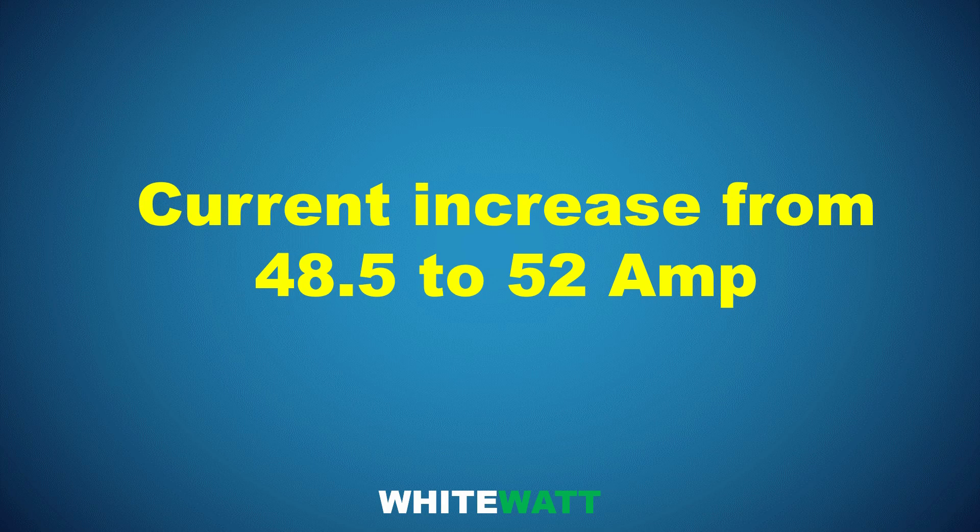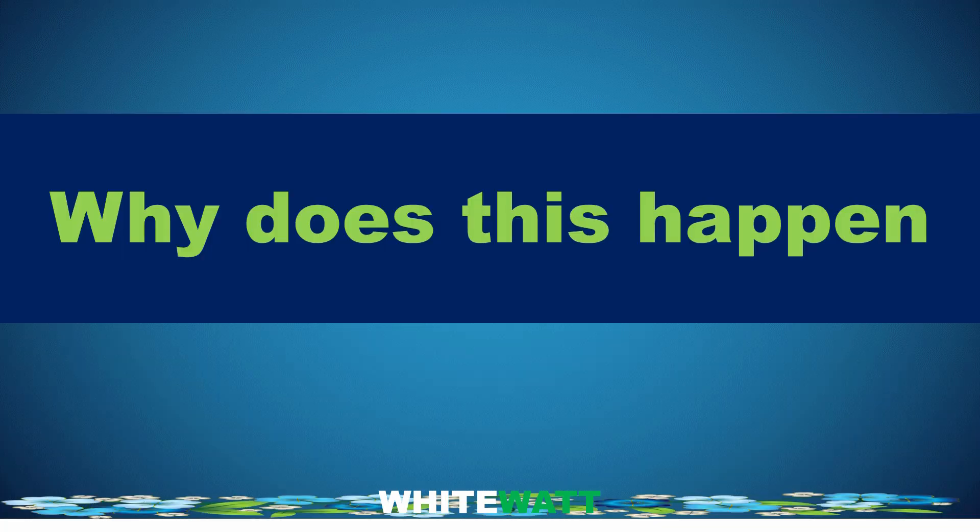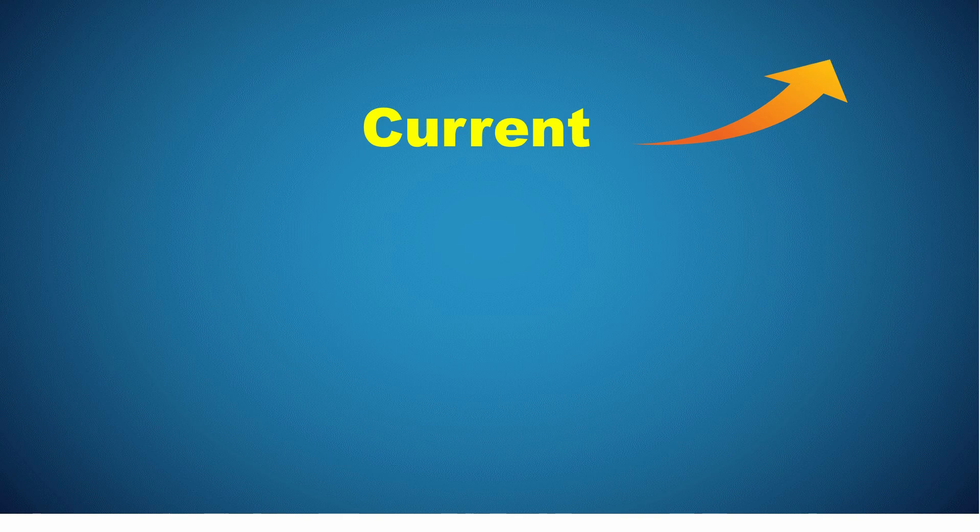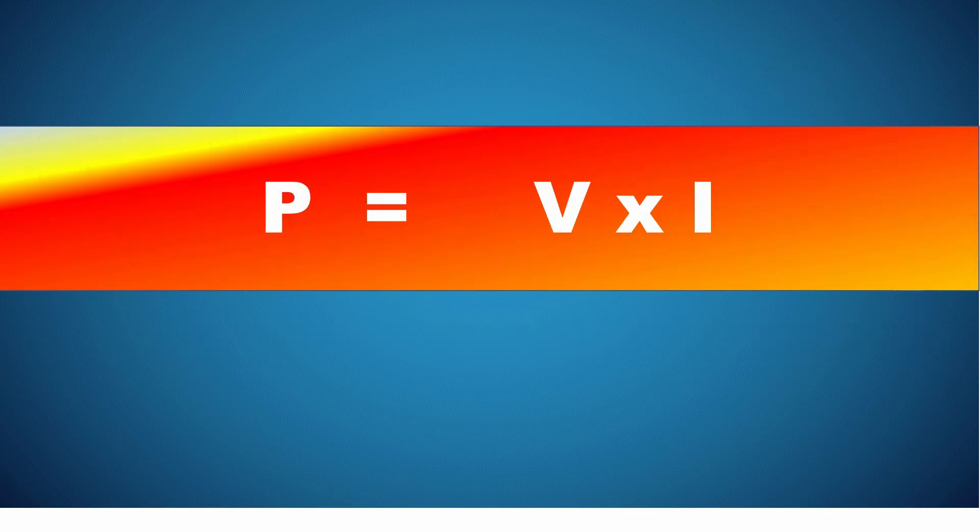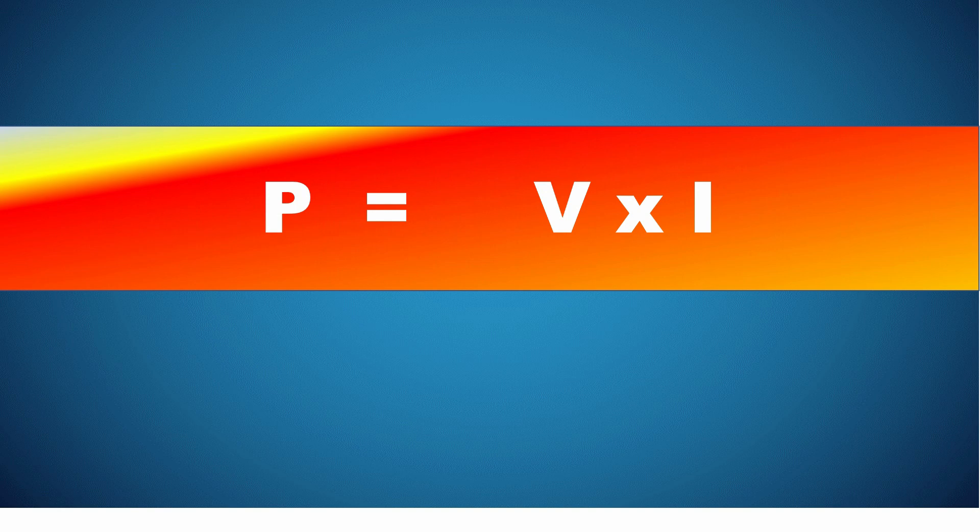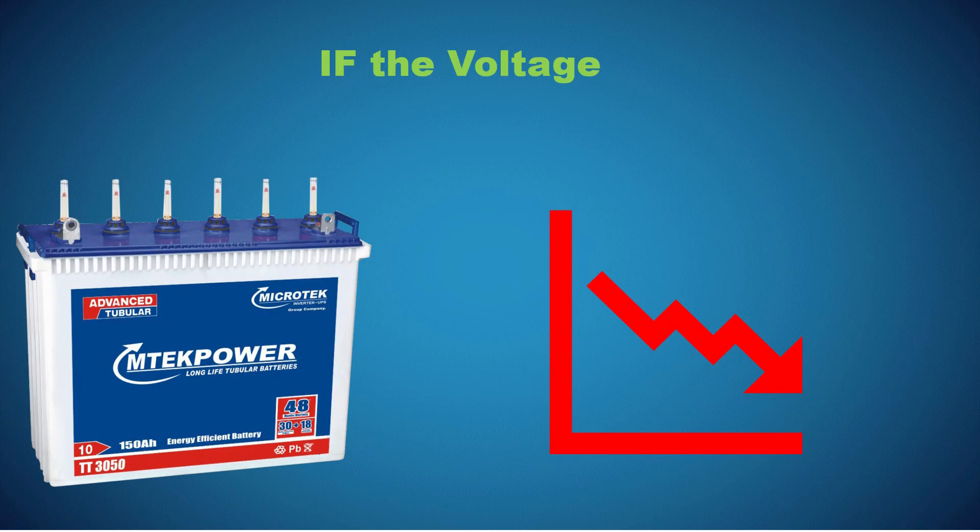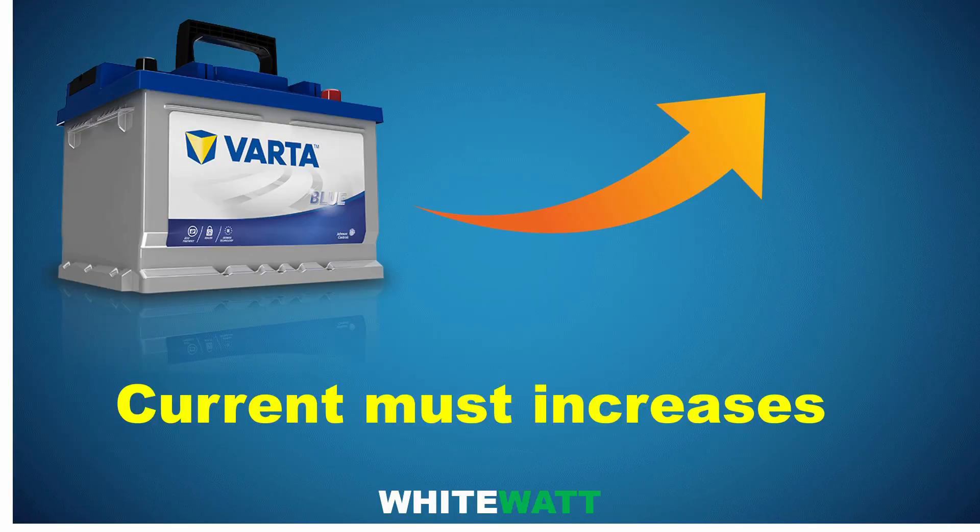Why does this happen? This increase in current happens because the power consumption by the load is constant, and power is the product of both voltage and current. If voltage drops, the only way to maintain the same power output is for the current to increase.